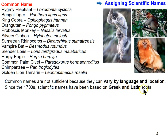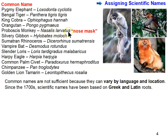Since the 1700s — since Carolus Linnaeus — scientific names have been based on Greek and Latin roots. For example, Nasalis larvatus is the proboscis monkey: 'nasalis' refers to nose (like 'nasal'), and 'larvatus' refers to mask, because the proboscis monkey looks like it's wearing a mask with a huge nose — almost comical looking.